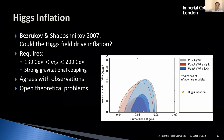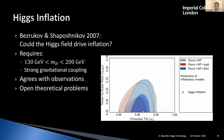The data and theory match incredibly well, and that's really why we are convinced there truly was a period of inflation. The puzzle is: what was this inflaton field? What was this scalar field? In 2007 — before the Higgs boson was discovered experimentally — two Russian physicists, Bezrukov and Shaposhnikov, postulated that it was actually the Higgs field.